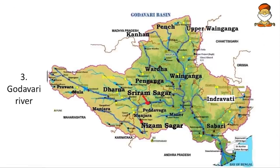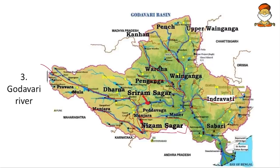Now the Godavari river and its important tributaries. Starting: Indravati comes first, then Wainganga, then Wardha — remember Wardha and Wardha Ashram of Mahatma Gandhi. Then Penganga is very near to it. After Penganga comes the Dharna river. Then the Manjra river, which flows in a curve. Remember the Nizam Sagar Dam and the Sriram Sagar Dam — both located on the Godavari river. Around the Indravati we have the Indravati Tiger Reserve.